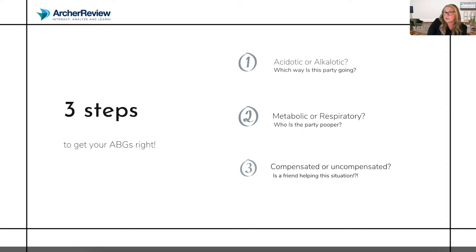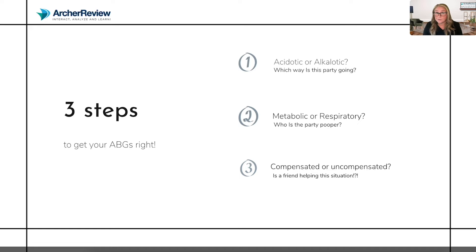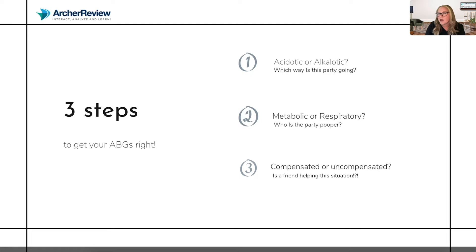Are we going to the left and becoming acidotic, or are we going to the right and becoming alkalotic? Step two: is it metabolic or respiratory? Who's causing our problem? Is bicarb the party pooper and therefore it's a metabolic problem? Or is CO2 the party pooper and therefore it's a respiratory problem? And then lastly, is this a compensated or uncompensated ABG? Do we have a friend trying to help us out and save the day here?